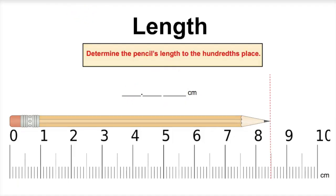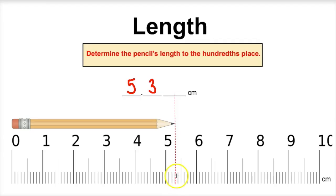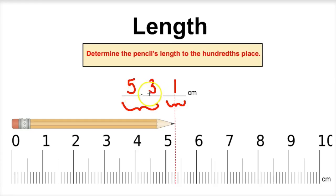Let's take a look at another one. It says to determine the pencil's length to the hundredths place. We know for certain that this pencil is 5 centimeters in length. We also know it's 5.1, 5.2, and if we get really close, we can see it is definitely 5.3. Looking at this red dashed line, it's just a little bit past 0.3, so we'll call this 5.31. If you said 5.32, that would be acceptable also, because this measurement has a level of uncertainty. We know with 100% certainty the pencil's length is at least 5.3 centimeters.